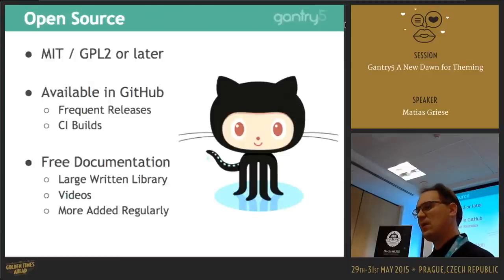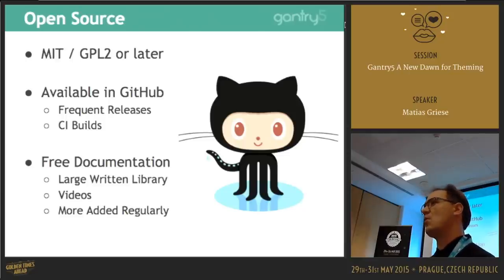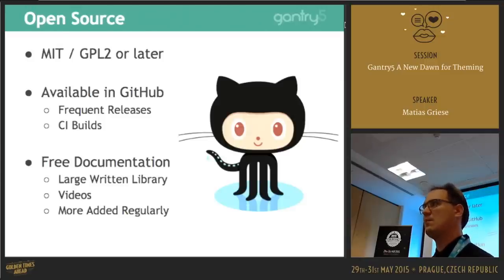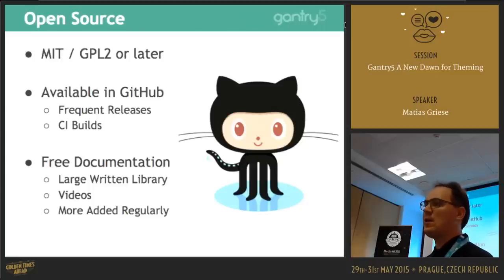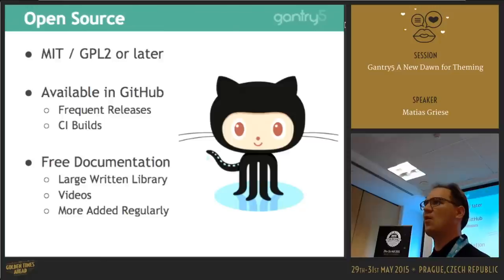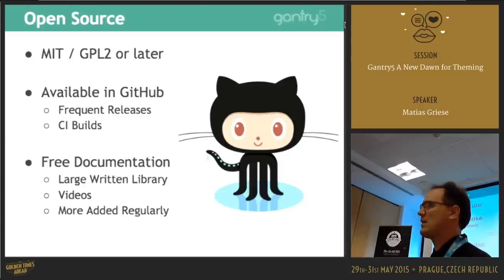Gantry 5 is fully open source. We have an MIT license for most of the code and GPL 2 for Joomla, WordPress, and platforms that use GPL. It's available on GitHub so anyone can access the code, make their own modifications in a fork, and contribute code back to us. We also try to make frequent releases and we have nightly builds, plus free documentation.